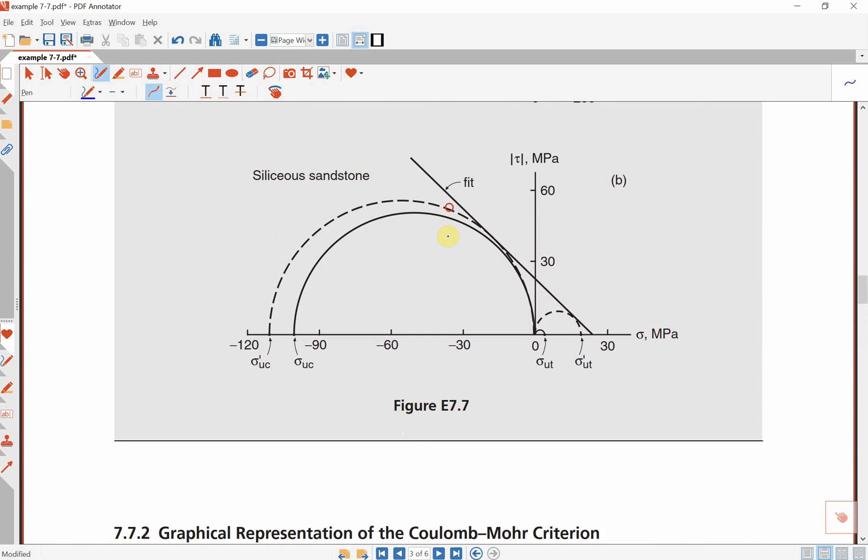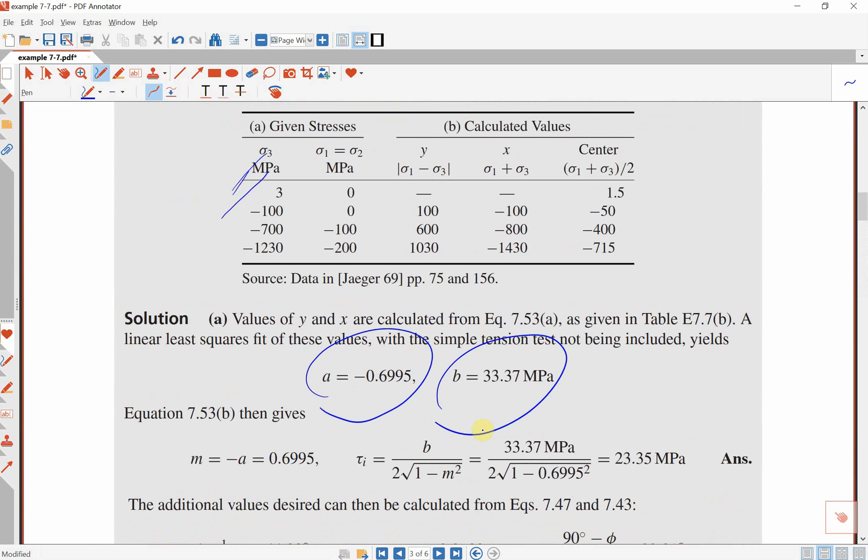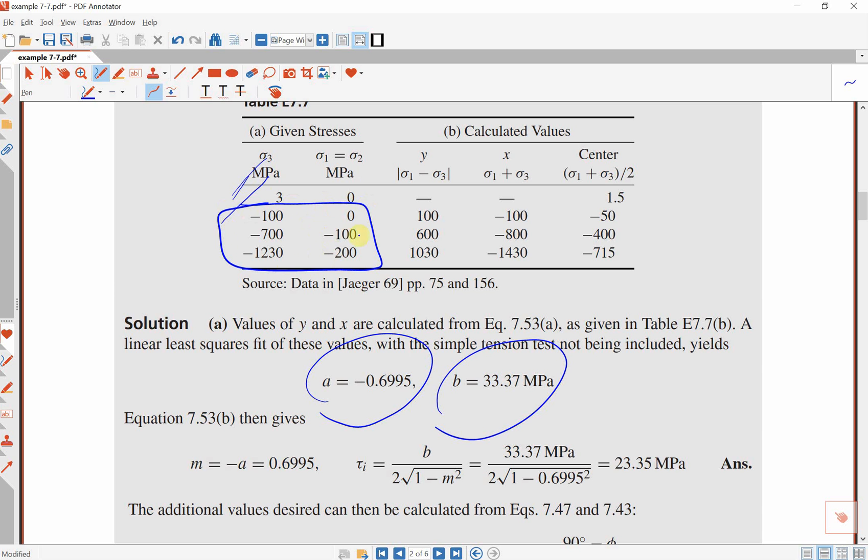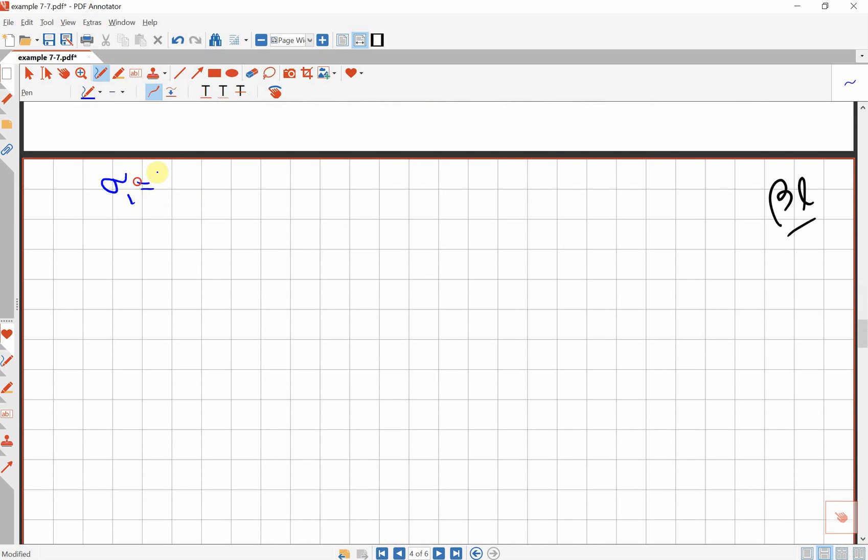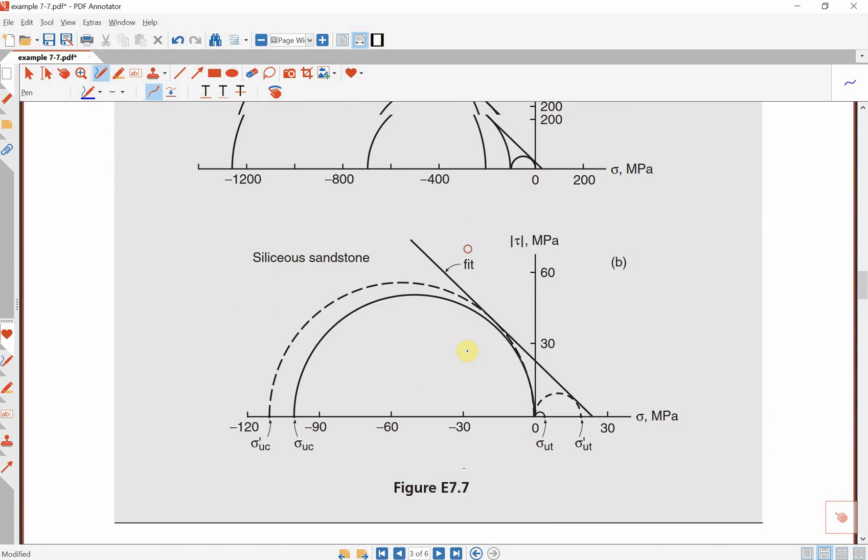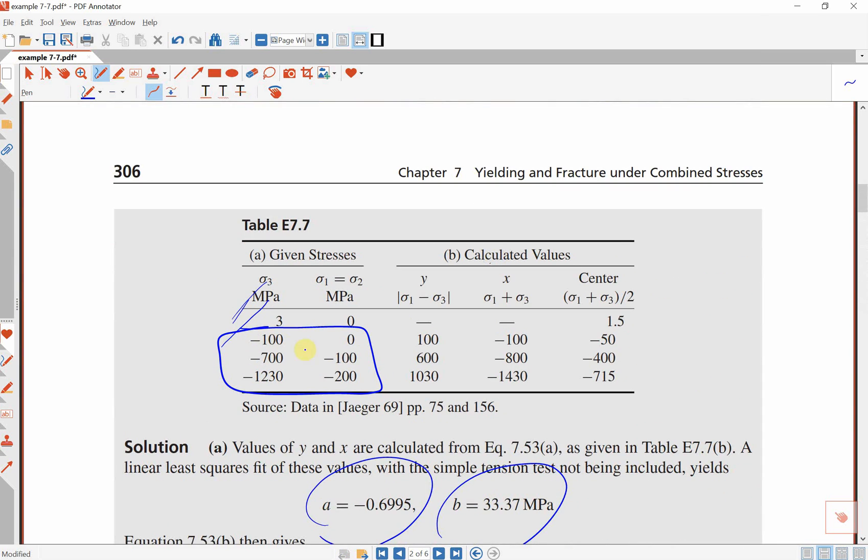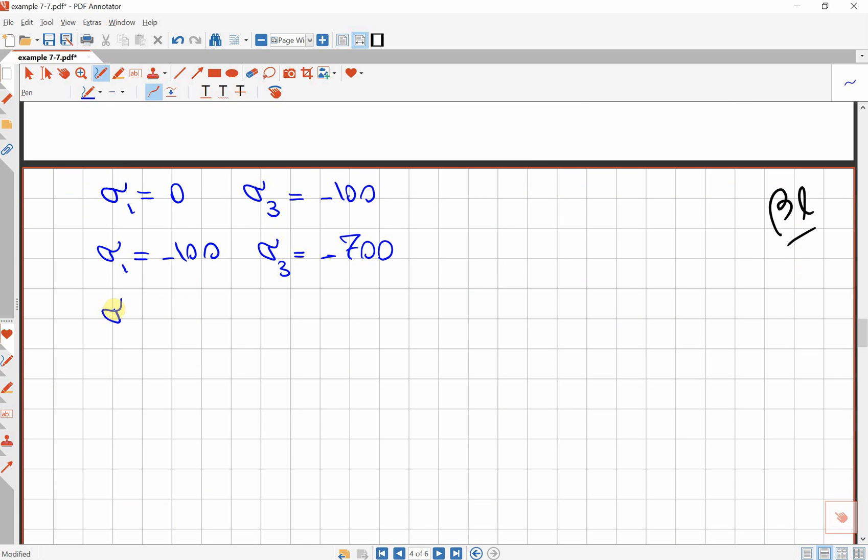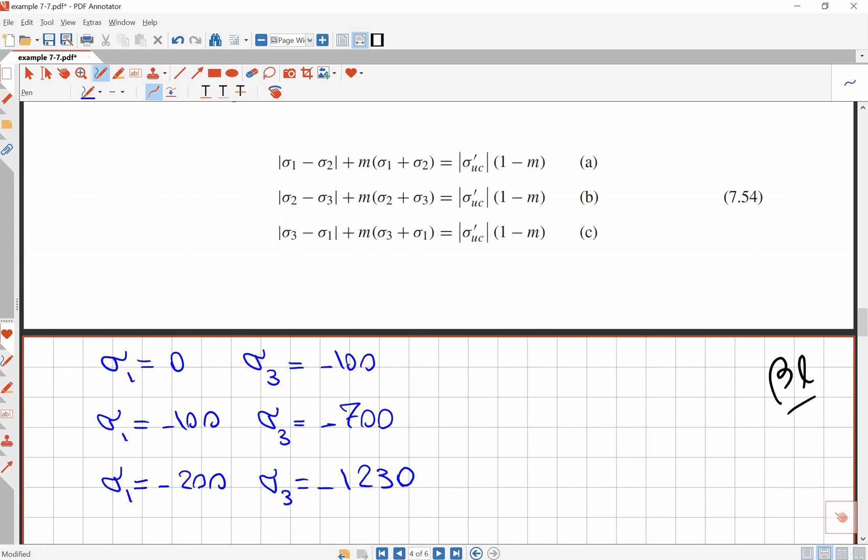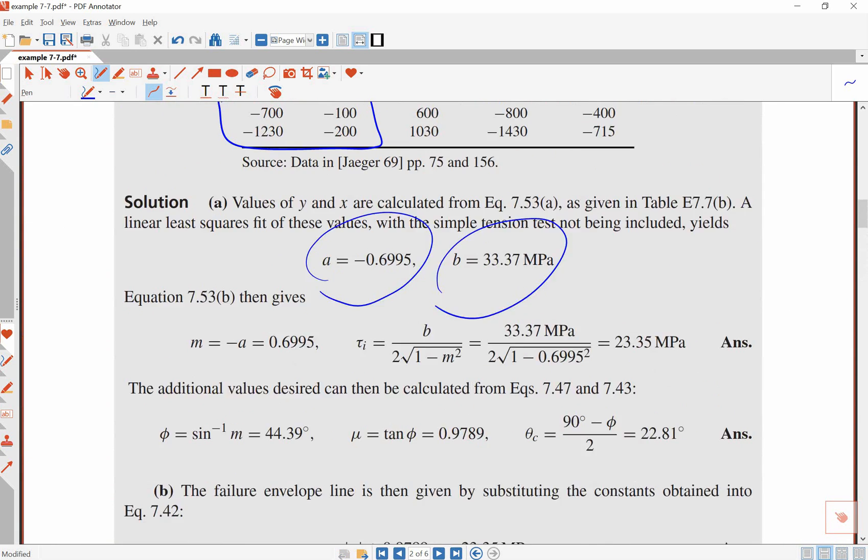So let's say I'm going to copy the information from the table. Sigma 1 is 0, sigma 3 is minus 100. Sigma 1 is minus 100, sigma 3 is 0. Then minus 100, minus 700, minus 700. And for the third one, sigma 1 is minus 200 and sigma 3 is minus 1230. And the units of all of them are megapascal.